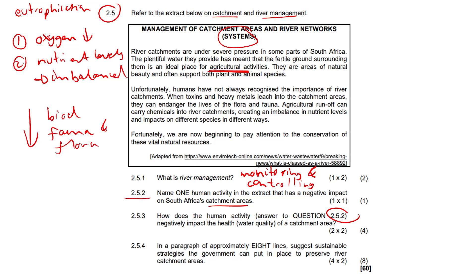Question 2.5.4 is the last paragraph question. In approximately eight lines, suggest sustainable strategies the government can put in place to preserve water catchment areas. Yes, there are real challenges in South Africa — potholes, corruption — but let's dream and just answer the question.